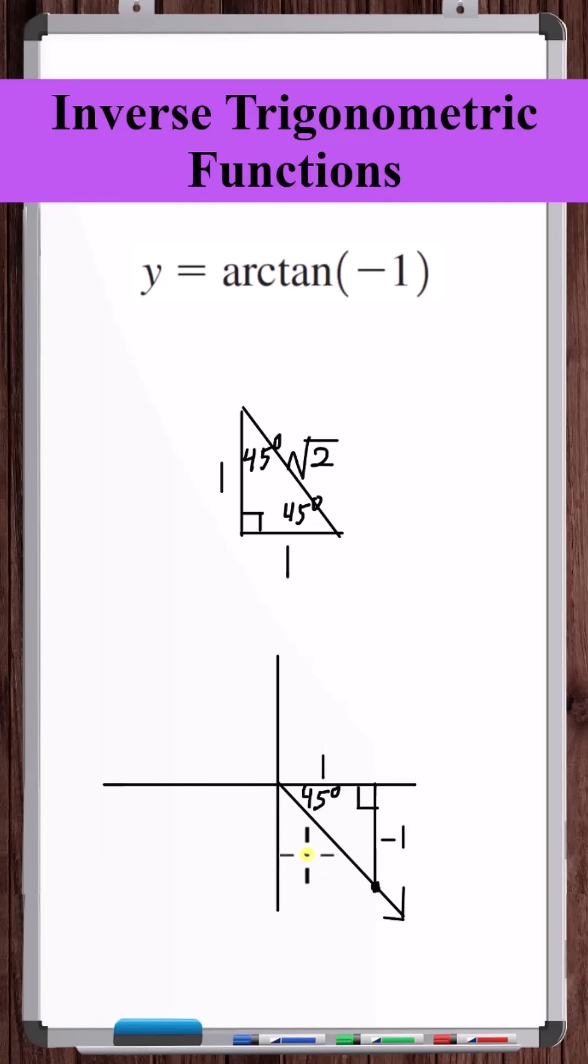Positive 1, negative 1, square root of 2. Tangent of this reference angle is negative 1, and this actual angle itself is 315 degrees. So this is equal to 315 degrees.